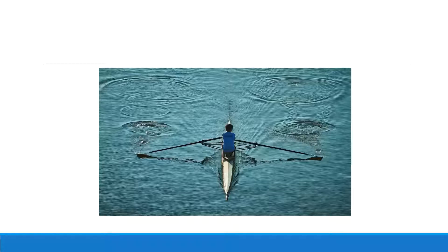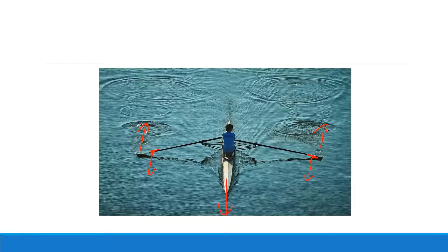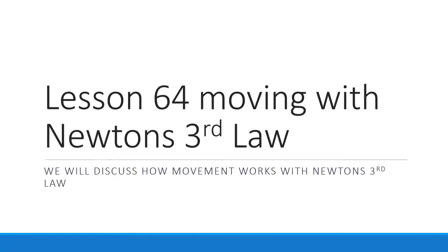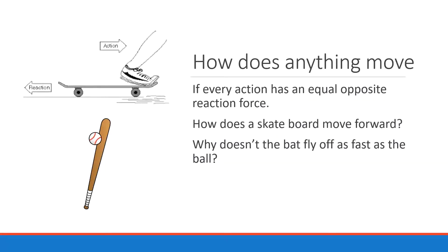So if this rower pushes back on the water, the water will in turn push forward on the oars, and that will have a net force of pushing the rower forward — that's how this person is able to move forward. Importantly, that force is the same, but the acceleration is different.